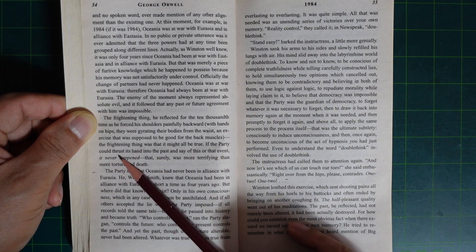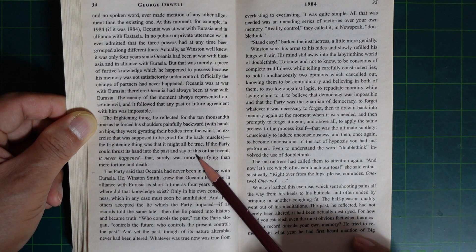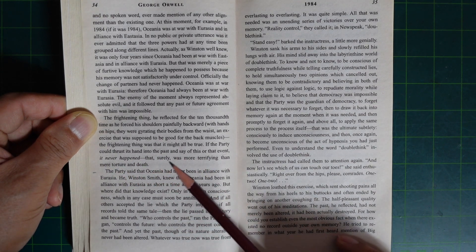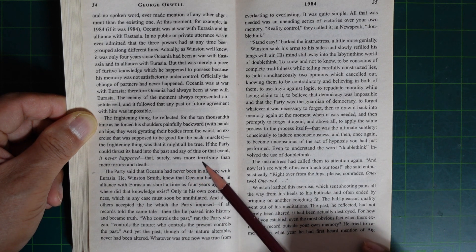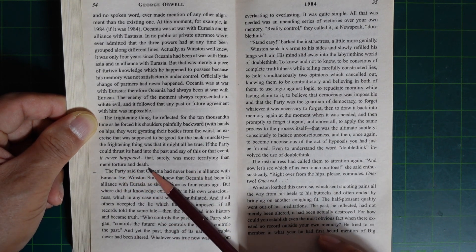Oceania was at war with Eurasia. Therefore, Oceania had always been at war with Eurasia. The enemy of the moment always represented absolute evil, and it followed that any past or future agreement with him was impossible.